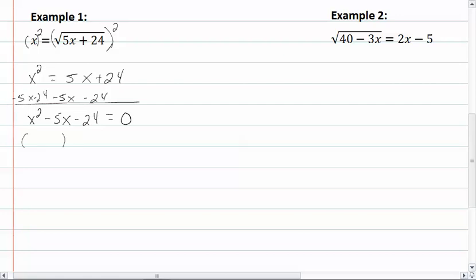This will factor out as (x - 8)(x + 3) = 0. We set each factor equal to 0 and solve, and we'll get x = 8 and x = -3.